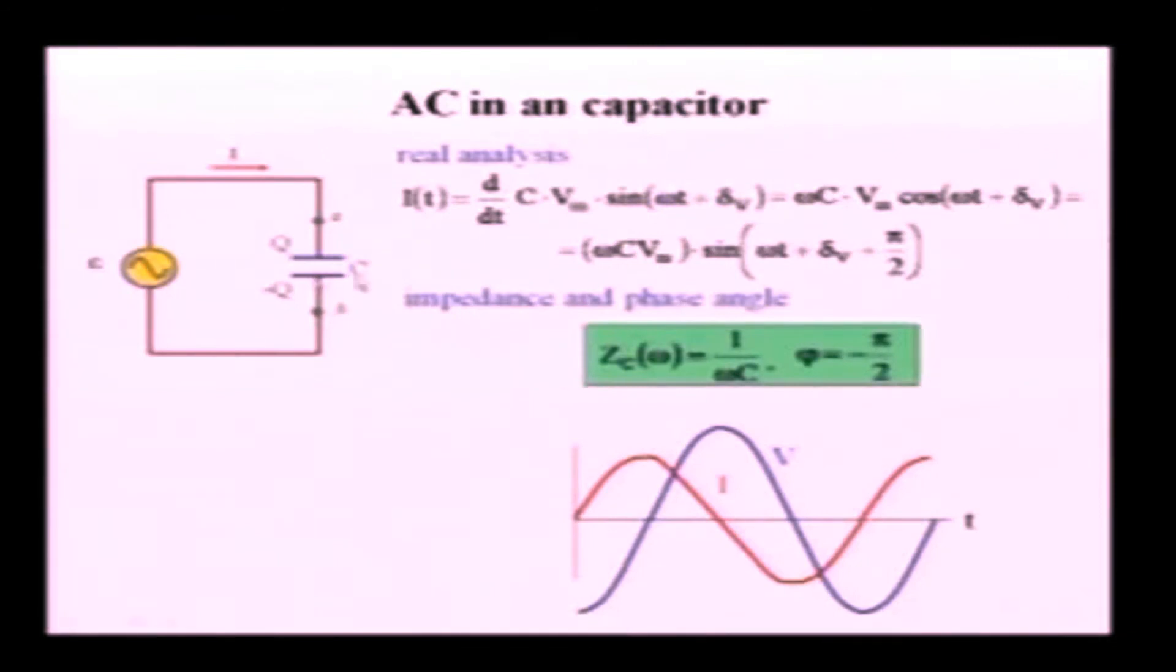This time, phase of the current happens earlier than phase of the voltage. Look that at this instant, phase of the current is pi over 2, but we have to wait a quarter of a cycle for the voltage to get to that phase. We say that current leads the voltage by pi over 2 and voltage lags the current by pi over 2.